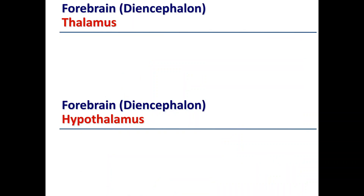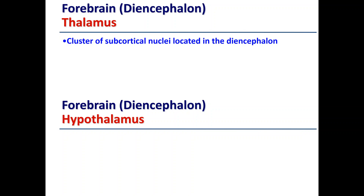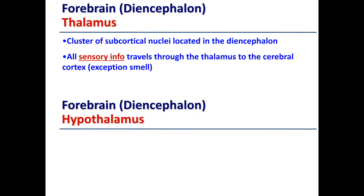The thalamus is a cluster of subcortical nuclei located in the diencephalon. All sensory information travels to the thalamus and then to the cerebral cortex, with the exception of smell. Sensory information comes to the brain stem, is relayed to the thalamus, and the thalamus then relays it to the cerebral cortex to help form our motor plan.